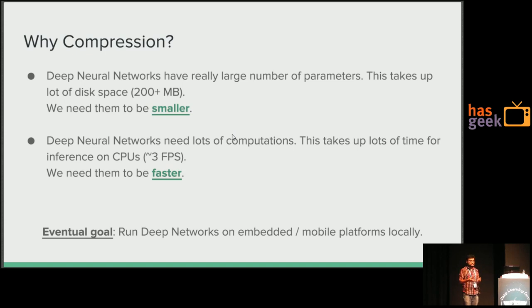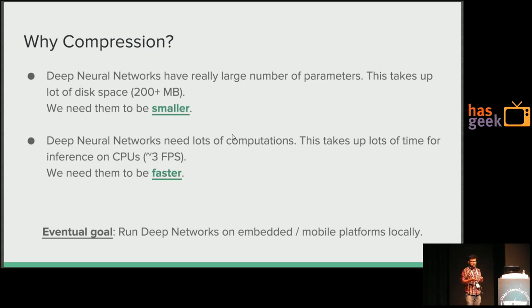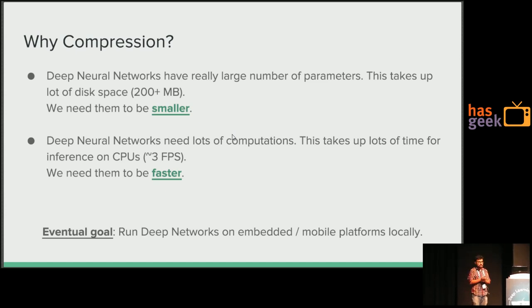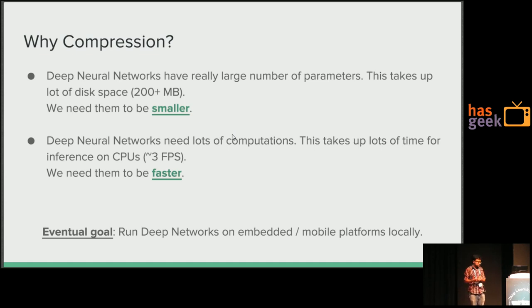200 MB is really too big for storing onto the RAM of a mobile phone. Even if an app is 200 MB, we would hesitate to download it because it's so big. You want app sizes to be ideally very small so they can run efficiently on mobile phones. We need to run deep neural networks on platforms with limited computational resources such as embedded platforms and mobile platforms. The current deep neural networks, taken as-is, may not be able to run on such small devices.